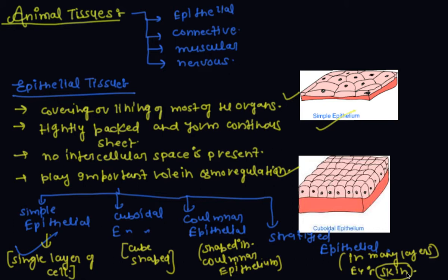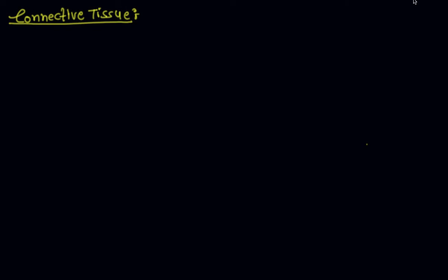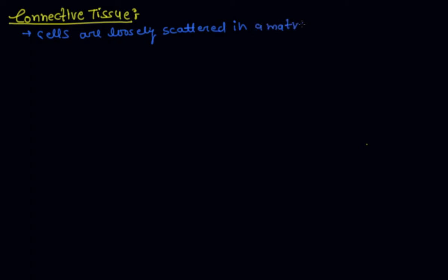Now the second type of animal tissue is connective tissue. The cells of connective tissue are loosely scattered in a matrix.